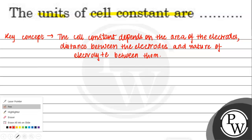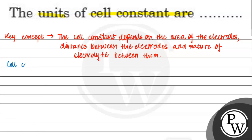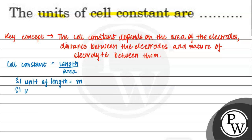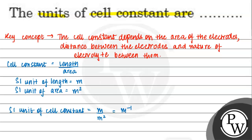Now, let's further solve this question. The cell constant, we know, is equal to length divided by area. The SI unit of length, we know, is meter. The SI unit of area, we know, is meters squared. So, the SI unit of cell constant will be meter divided by meter squared, which will be equal to meter to the power minus one.